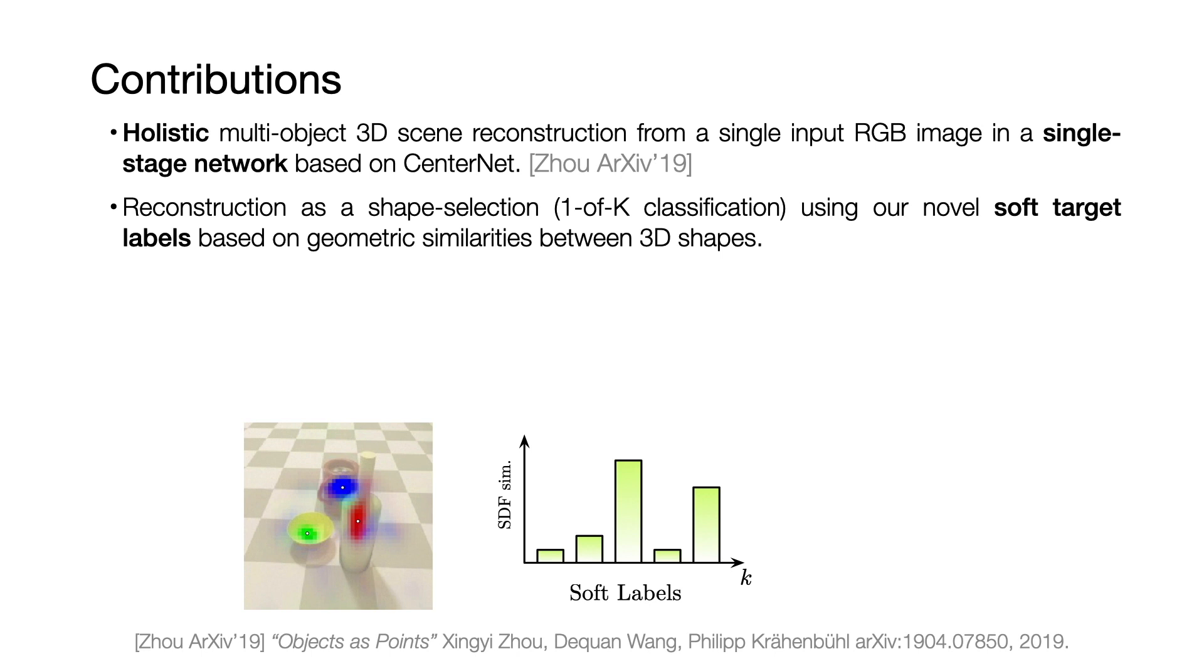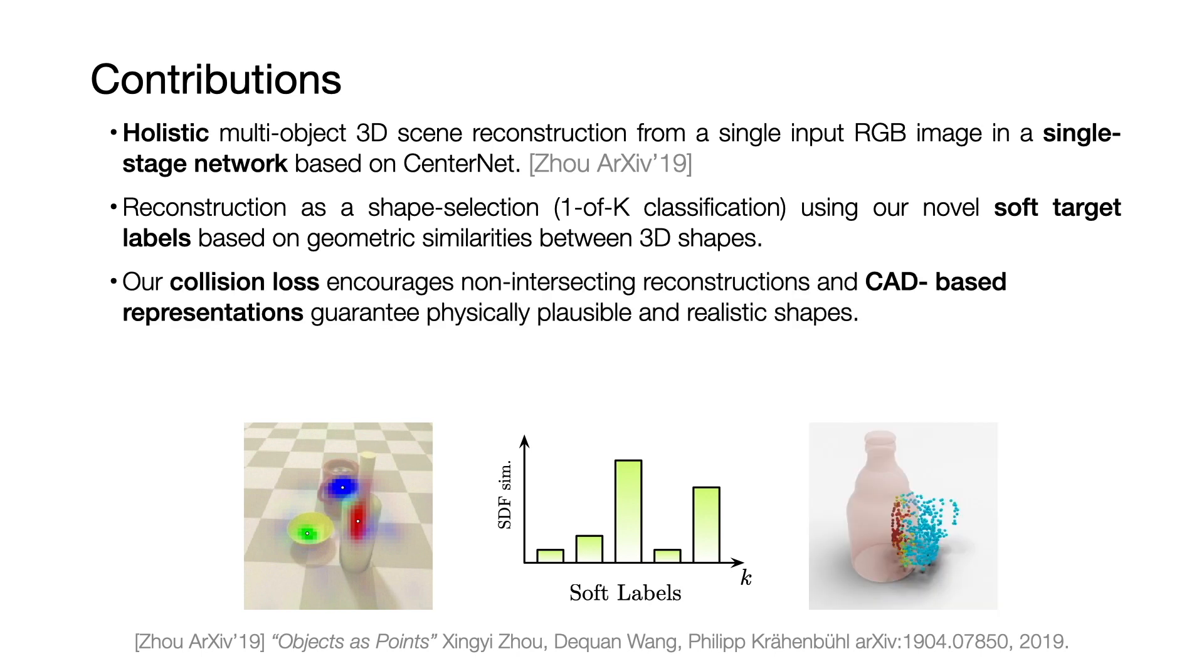Second, our reconstruction is formulated as a shape selection problem. This is implemented as multi-label classification with our novel soft target labels that are based on geometric similarities between training shapes. As our shape selection mechanism is representation independent, we use CAD models to reconstruct realistic and valid shapes.